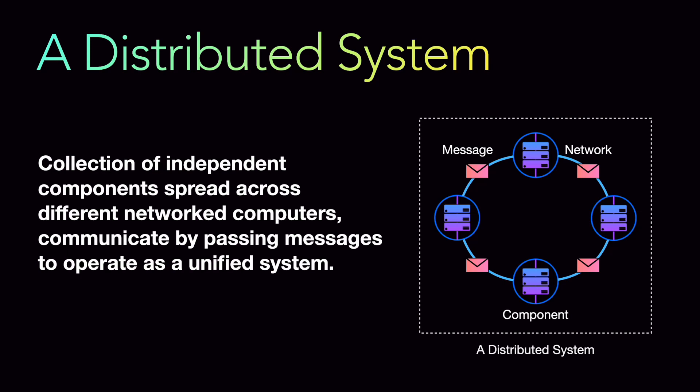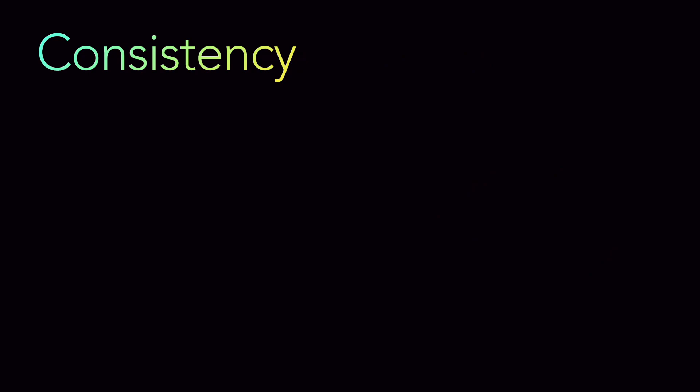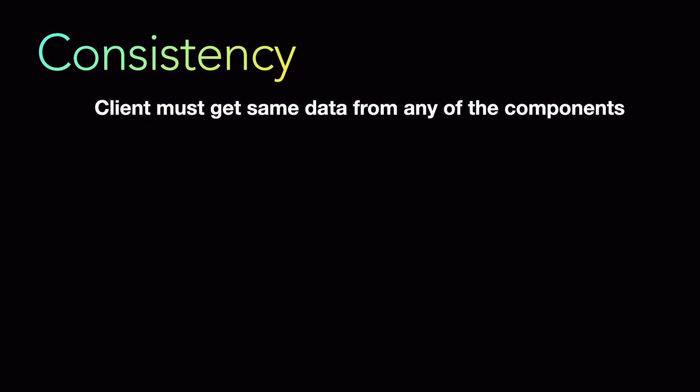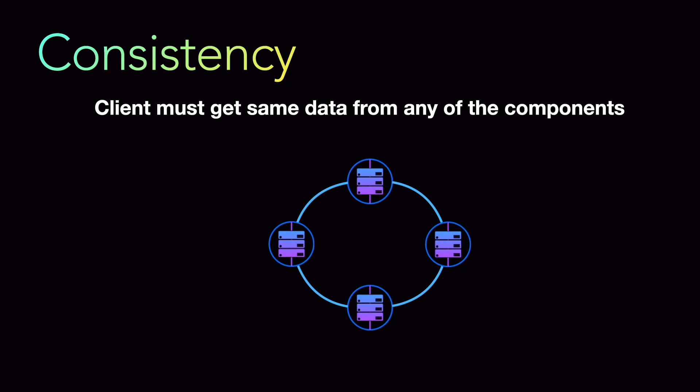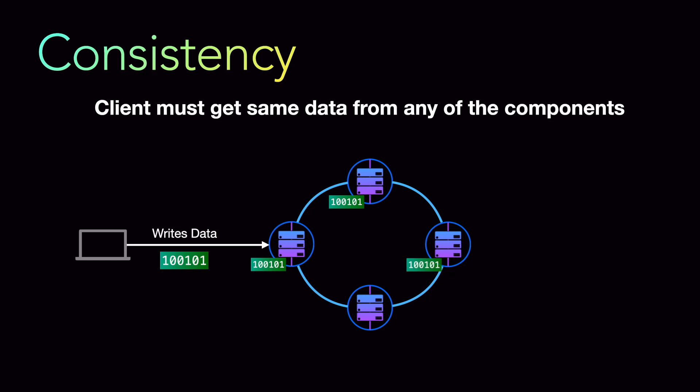Now if we look at each of the properties in the CAP theorem, let's start with consistency. Consistency states that a client must get the same data from any of the components. If there is a client writing data to one of the nodes in the distributed system, then once that node gets the data, all the other nodes will also get the same data through replication or some mechanism — all of them will have the same view of the data. So if another client tries to read, they will get the same data irrespective of which node they read from. That means all components are consistent — it is a strongly consistent system.